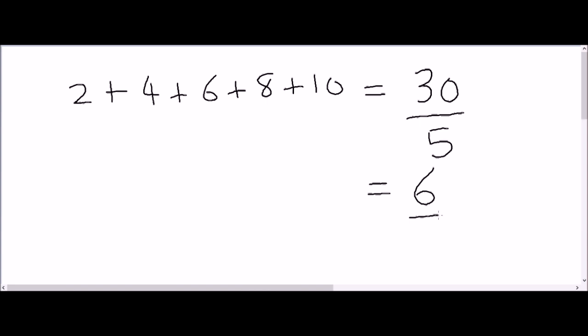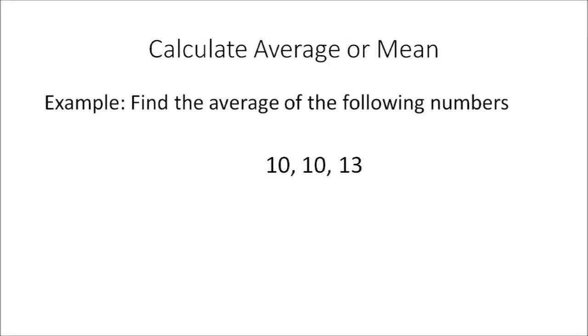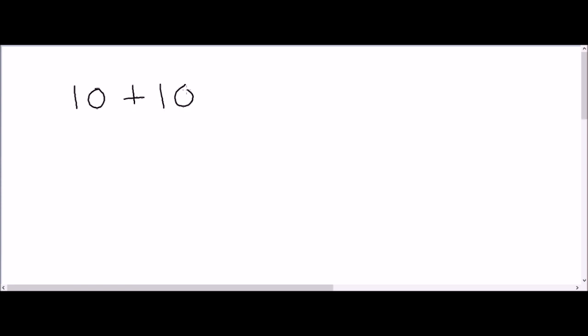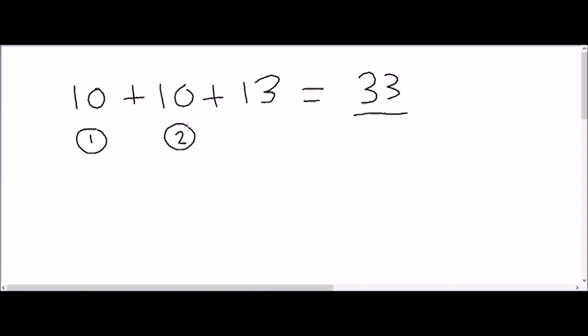The average of these 5 numbers is 6. Another example: find the average of the following numbers — 10, 10, and 13. It doesn't matter if a particular number is repeated. We still follow the formula: 10 plus 10 plus 13. If you add these 3 numbers you get 33, and you divide by 3 because there are 3 numbers — even though 10 is repeated, it is still counted as a separate number.